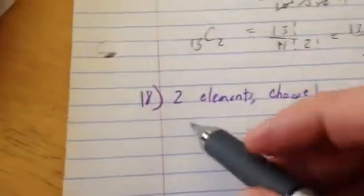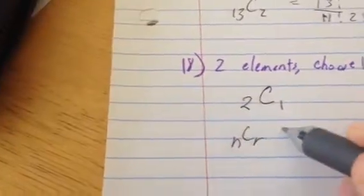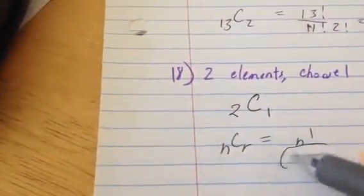So if I have two elements and I want to choose one, I would just say I have two elements and I want to choose one of them. And I would either let my calculator do it or I would do my nCr equals n factorial over n minus r factorial times r factorial.